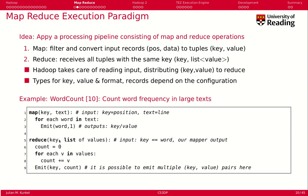In the Reduce function, we get a key and a list of values. The key is one of the words emitted in Map, and the list of values are the numbers, which are initially all ones. We count how often we see a certain word by setting count to zero, then for each value in the values we increment count by V, which is one. Afterwards we emit the word and the count, giving us how often we have seen a word like 'thee' or 'king'.